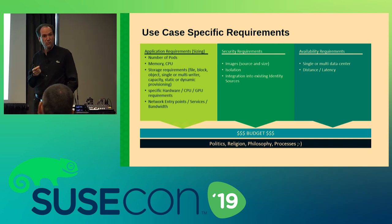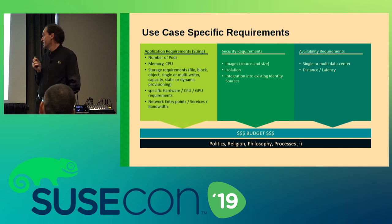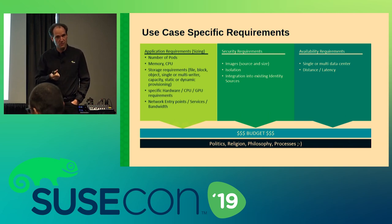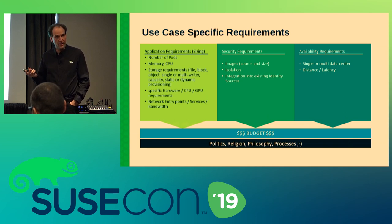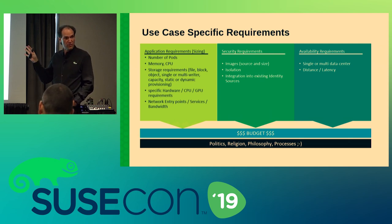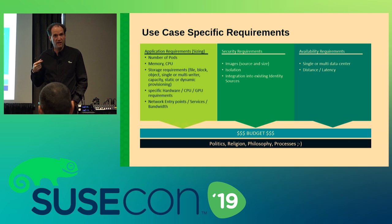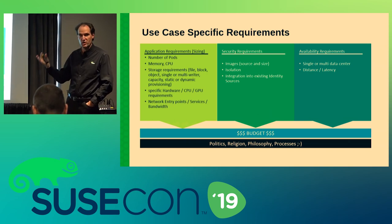We also need to understand storage requirements for the application. For example, SAP Data Hub requires dynamic provisioned block storage, dynamic provisioned file storage, and S3-based storage. From the application you are going to run, we need that information so we can set up the system properly. Sometimes there are specific hardware requirements — for example, in the gaming platform shown in today's keynote, you need GPU support in the servers. We also need to know about fiber channel connectivity or any special hardware requirements.